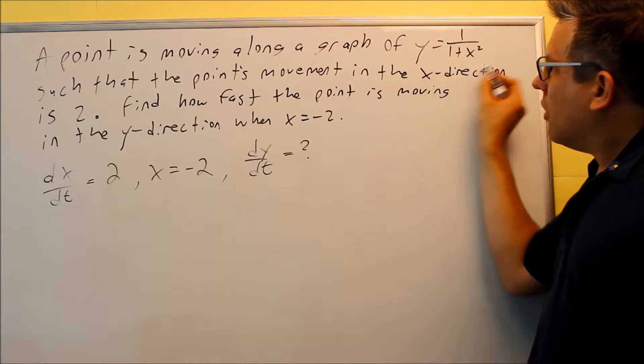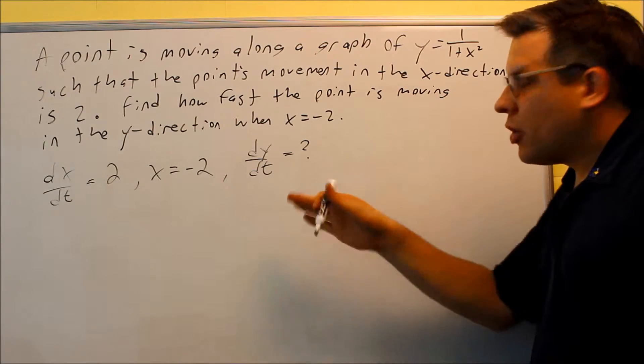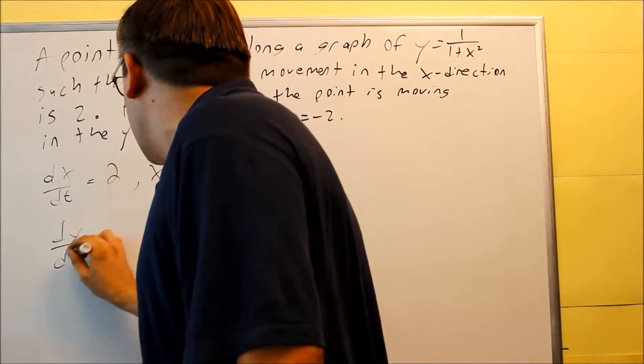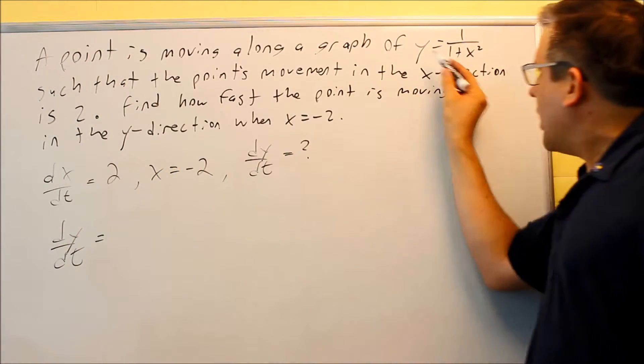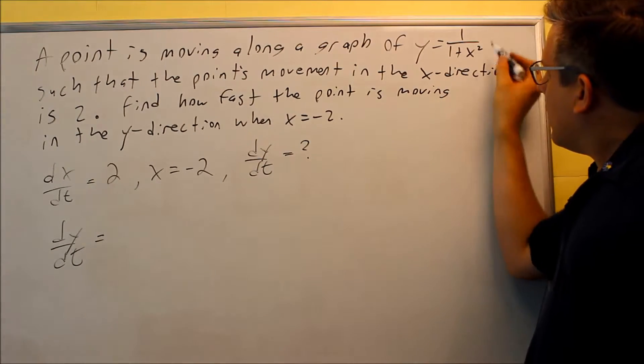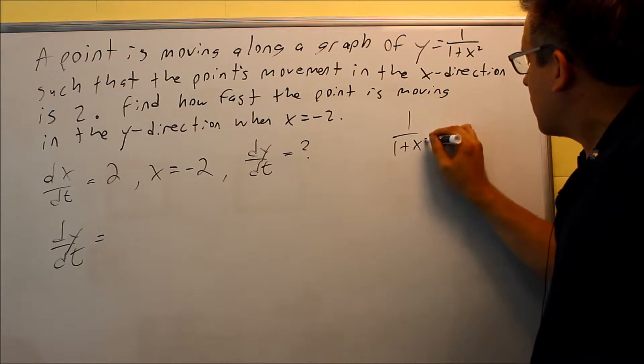So now we're going to use our equation right here: y equals 1 over (1 + x²). We're going to do derivative of both sides with respect to time, so we're going to do dy/dt on the left-hand side. Now this one right here—1 over (1 + x²)—I'm going to write that as (1 + x²) to the negative 1 power.